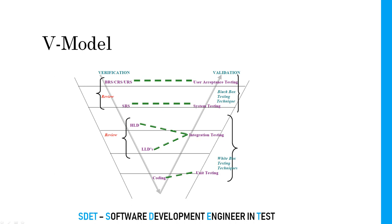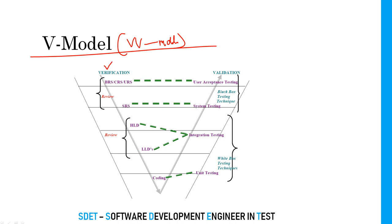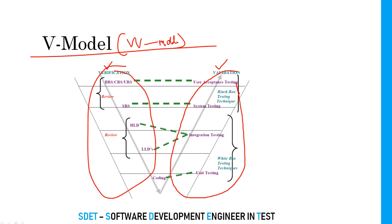These are the problems with the Waterfall Model. Now there is another model called the V-Model, also called the VV Model — Verification and Validation Model. It looks like a V shape, so it's called the V-Model. In this model we can overcome the challenges we have in classical SDLC models. There are two portions: one side is verification and the other side is validation.